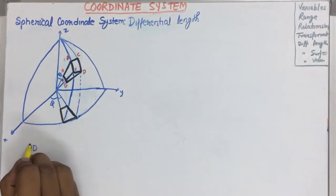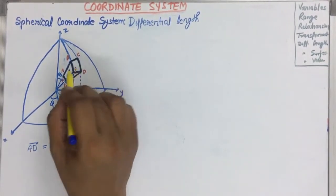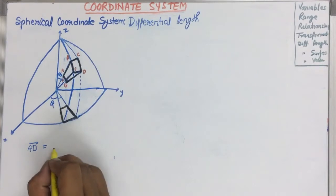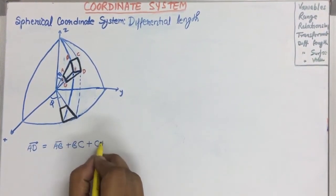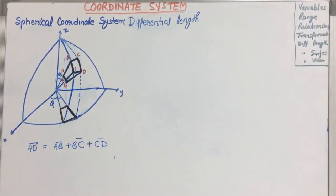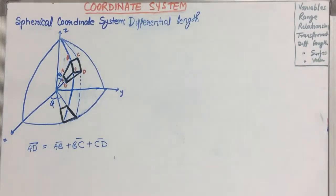So AD will be equal to AB plus BC plus CD. And we know that the increasing direction of any vector is considered as the direction of the unit vector.